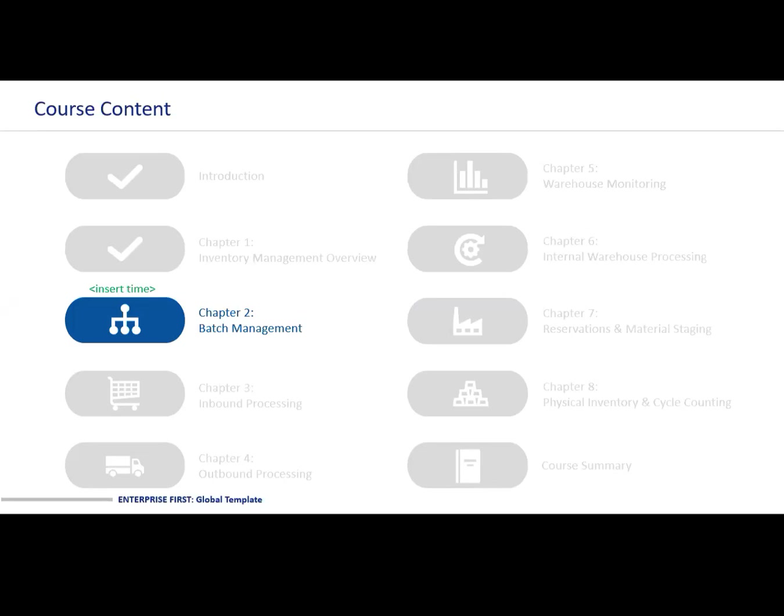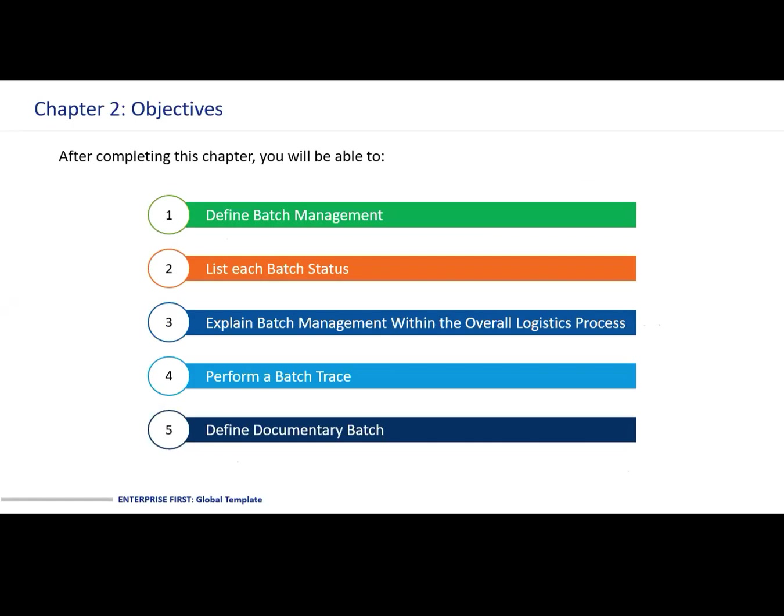Chapter two will be batch management. The aim of this is to cover the following subjects: we're going to define batch management, list each batch status, explain batch management within the overall logistics process, perform a batch trace, and define documentary batches.